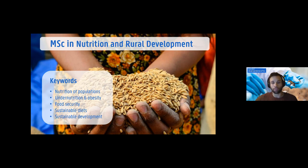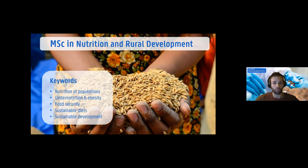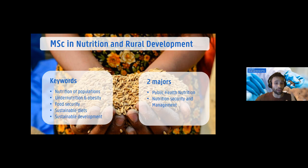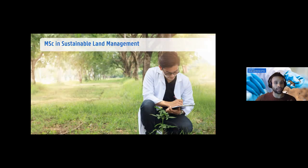Obesity, hunger, and malnutrition are issues worldwide. This program looks at how to address these issues specifically in rural areas, using food security and nutrition as a starting point to contribute to sustainable development at household, national, and international levels. At Ghent University, there are two majors: Public Health Nutrition, and Nutrition Security and Management.